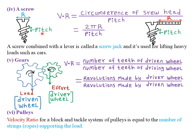Pitch is simply defined as the distance between successive threads of a screw. For example, the distance between the first thread of the screw and the second thread of the screw — if that distance is 5 millimeters, then the pitch of that particular screw will be 5 millimeters. To find the velocity ratio of a screw, we simply take the circumference of the screw head divided by the pitch.